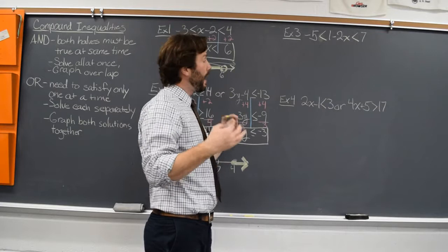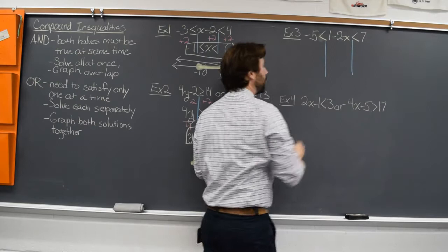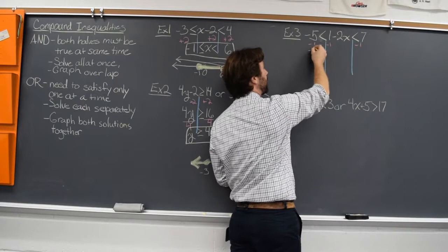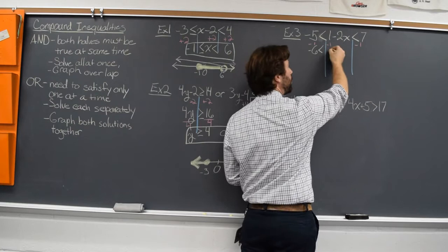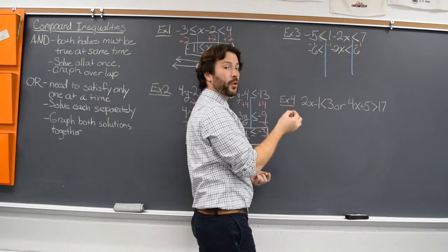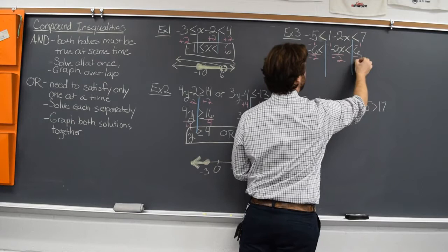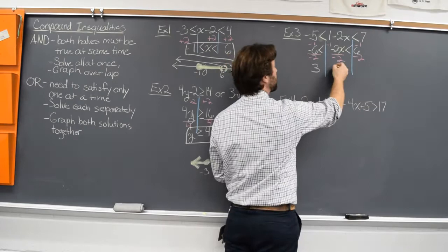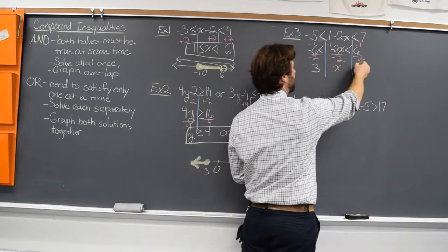This one's an and. I have those two inequalities pushed together. The first thing we'll do, after those lines, is subtract one from all three sides. Negative five minus one is negative six. One minus one is zero. So I have negative two x is less than seven minus one, which is six. Now it's still being multiplied by negative two, so we'll divide all three sides by negative two. On the left side, negative six divided by negative two is positive three. In the middle, negative two x divided by negative two is x. And on the right, six divided by negative two is negative four.